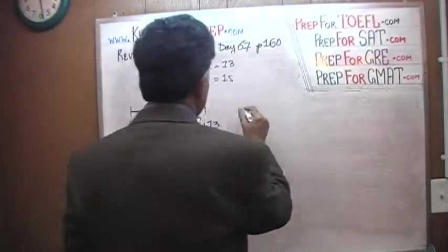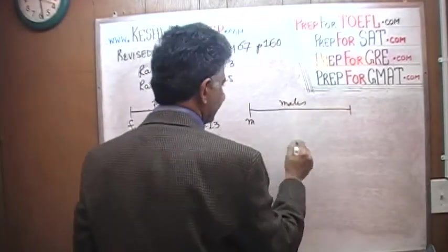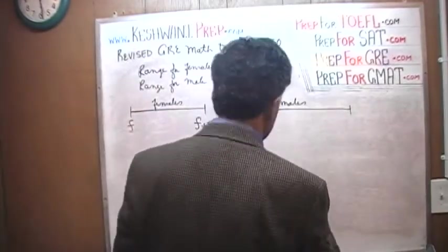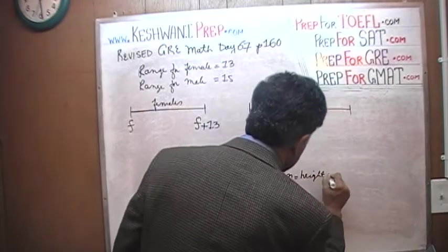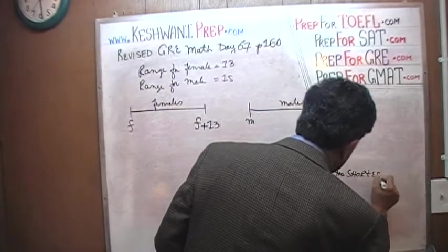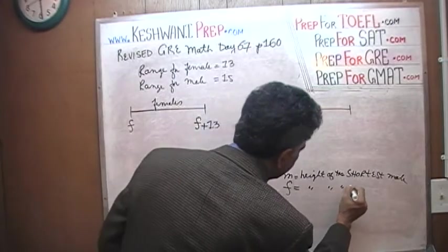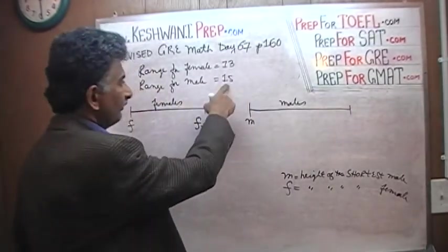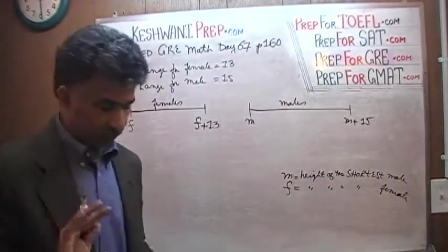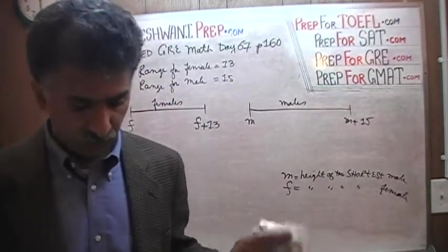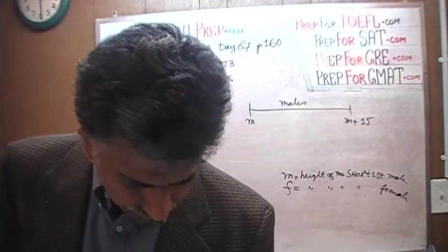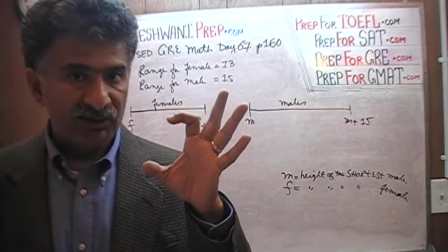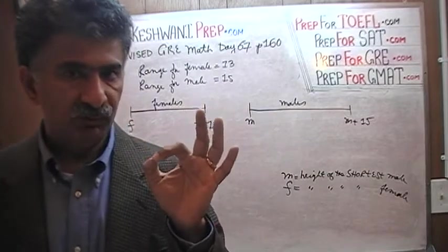In the males, M stands for the height of the shortest male. Similarly, F stands for height of the shortest female. If M is the shortest male and the range is 15 inches, then the tallest guy must be M plus 15. So far so good. We are just setting it up. I have not even bothered to reach the punchline yet. The punchline is what they are asking for.